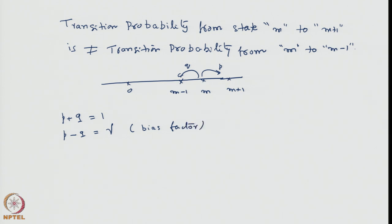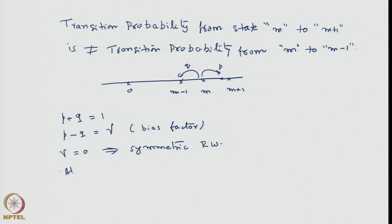If gamma equals 0, it corresponds to a symmetric random walk. We can also express p and q in terms of gamma. Adding the two equations: 2p = 1 + gamma, so p = (1 + gamma)/2. Subtracting: 2q = 1 − gamma, so q = (1 − gamma)/2. Once we have the bias factor, we can express both the upward and downward transition probabilities in terms of gamma.